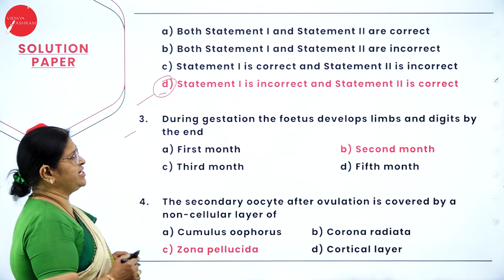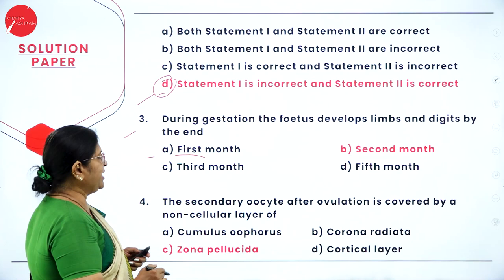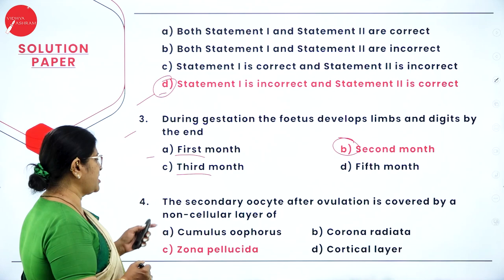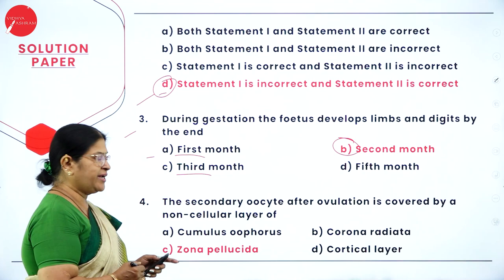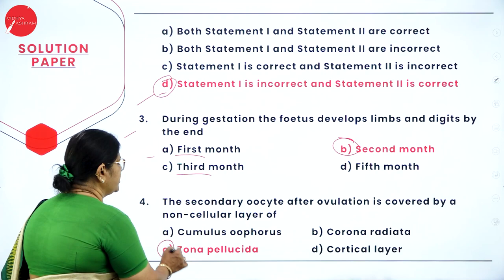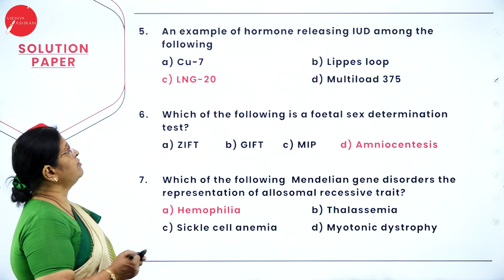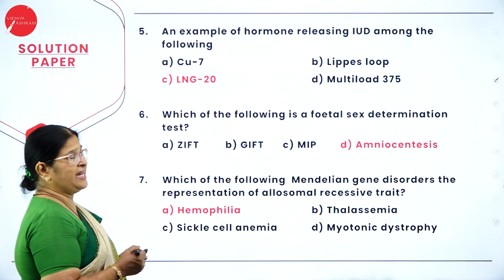Question 3: during gestation, the fetus develops limbs and digits by the end of — the answer is B, the second month. Question 4: the secondary oocyte after ovulation is covered by a non-cellular layer of — option C is correct: zona pellucida. Question 5: an example of hormone-releasing IUD — the answer is C: LNG-20.